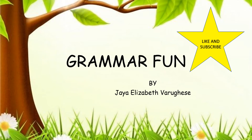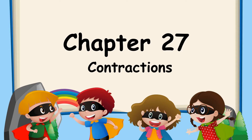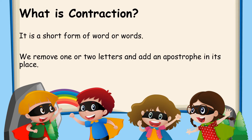Hello everybody. Welcome to my channel Grammar Fun. My name is Jaya and we will be learning grammar together. Today we are going to look at chapter number 27: Contractions. What is a contraction? It is a short form of a word or words. We remove one or two letters and add an apostrophe in its place. So the short form of some words is called a contraction.